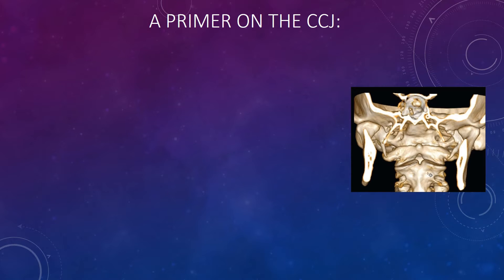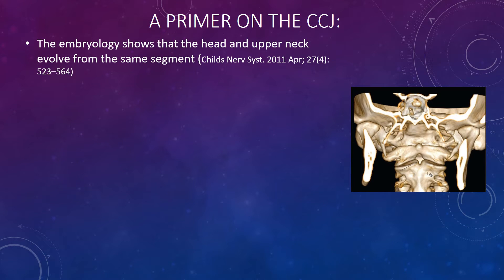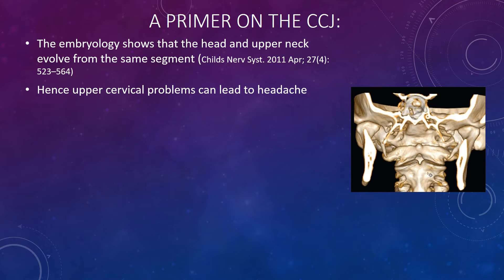A primer on the cranio-cervical junction: basically, as babies develop, it's pretty clear that the head and neck are one unit and they develop together. Your body really can't tell the difference between a pain coming from your brain and a pain coming from your upper neck — it's all the same.